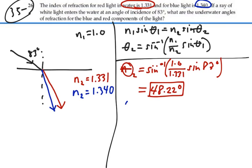For the blue light, theta 2 will be the inverse sine of index 1, 1.0, over the index of refraction of the blue light in water, 1.340. We'll have the same incident angle because it's white light coming in. So, that's going to give us 47.79 degrees.